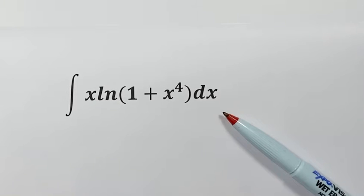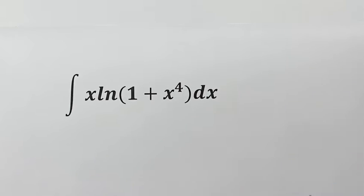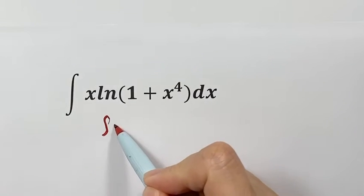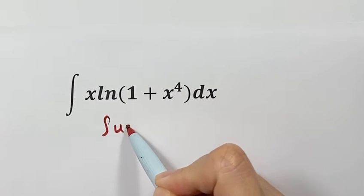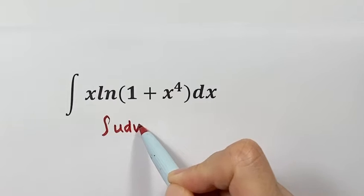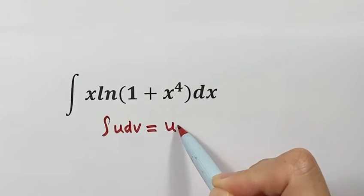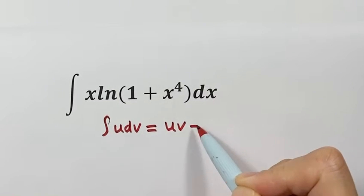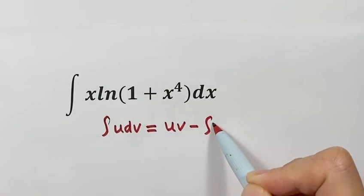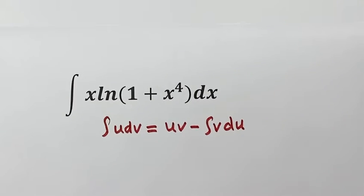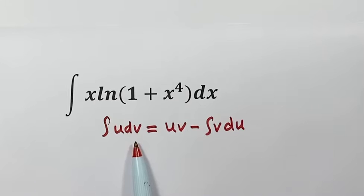First, we are going to use integration by parts. Here is the formula: the integral of u dv equals u times v, minus v du. So we need to choose what is u and what is dv.